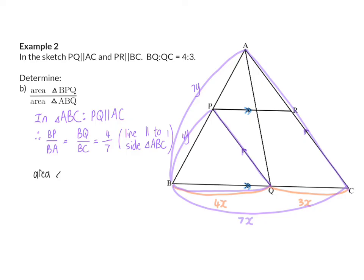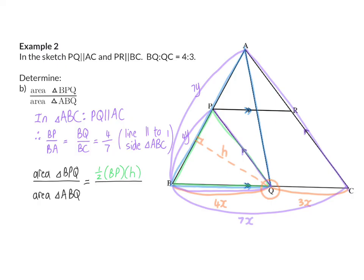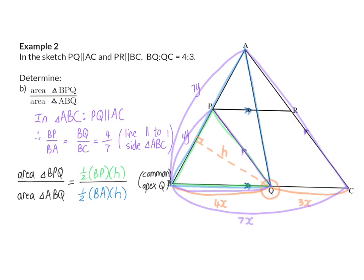Now I can move to the question: the area of triangle BPQ over the area of triangle ABQ. The green triangle has area half times BP times the perpendicular height, divided by the blue triangle's area of half times BA times the same height. The reason for the same height is common apex Q. Simplifying — half divided by half and H divided by itself equals 1 — I'm left with BP over BA, which we calculated as 4 over 7.